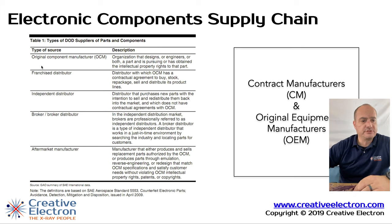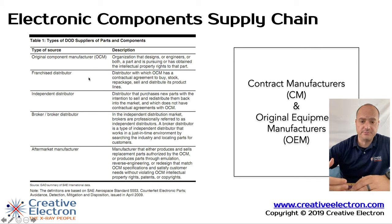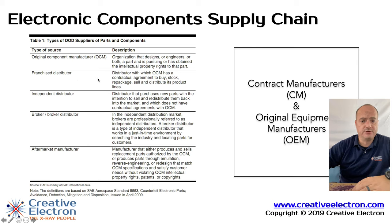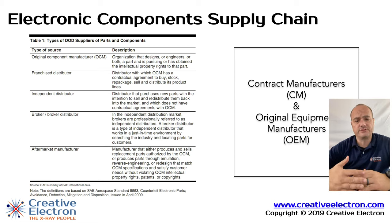The franchise distributors are the companies that the OCMs engage to sell their components. They have a direct relationship with the OCM and get components directly from the OCM's foundries. These franchise distributors include names you've known — Avnet, DigiKey, Future. Those are franchise distributors directly from the OCM.